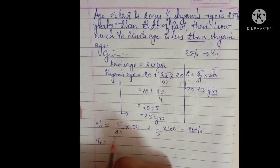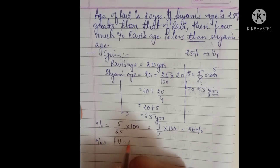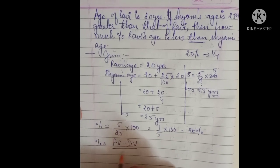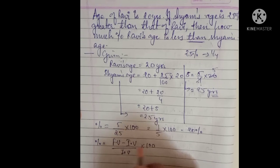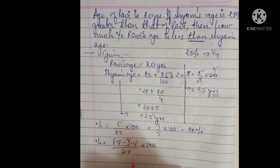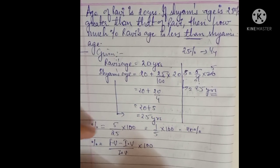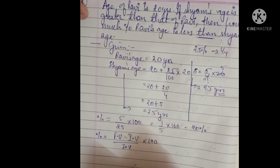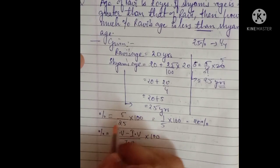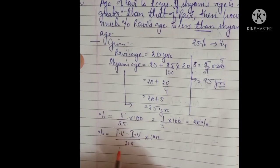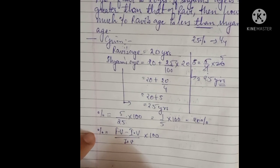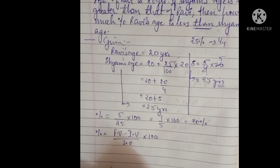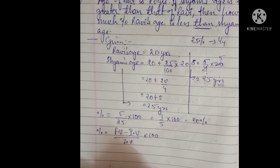This is the formula: the difference, which is (final value minus initial value) upon the initial value. This is also a formula — we call it the comparative or relative percentage. We are finding the relative percentage, and it is similar to what we just solved. You can use this method in other ways too.